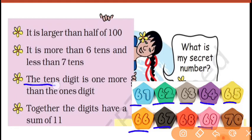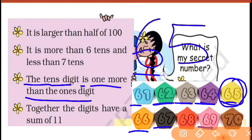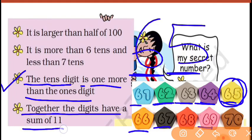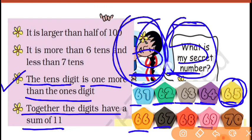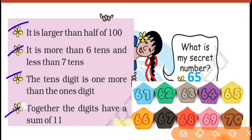Next clue: the tens digit is one more than the ones digit. Kaun sa aisa number hai jisme tens digit, ones digit se ek zyada hai? That is 65 — tens place is 6, ones place is 5. And the last clue: together the digits have a sum of 11. 6 plus 5 is 11 — yes! So the number is 65. Aapne saare clues padh liye aur number guess kar liya.